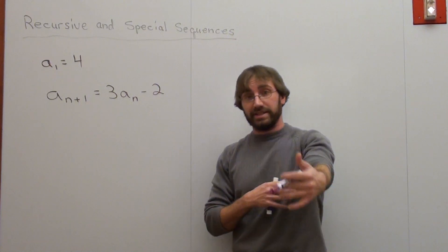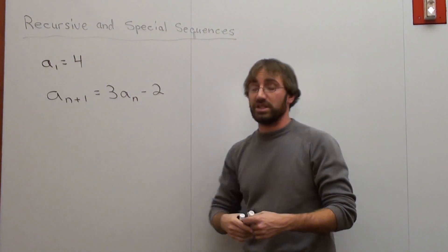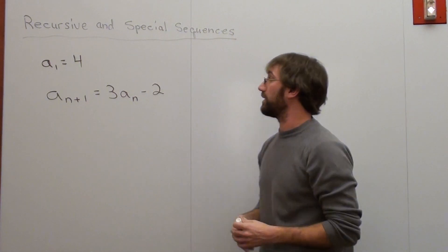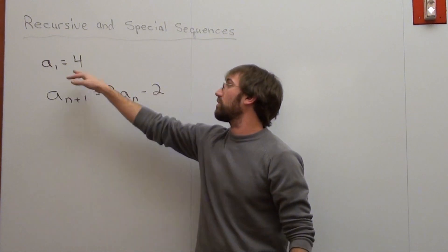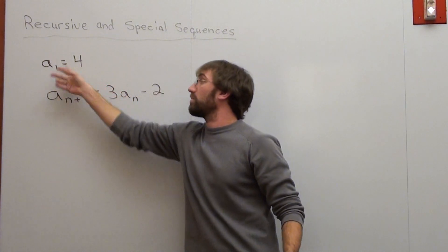Hello again. We're doing an example of recursive and special sequences, specifically recursive formulas. I've got this sequence where the first term is 4, the first term of A is 4.